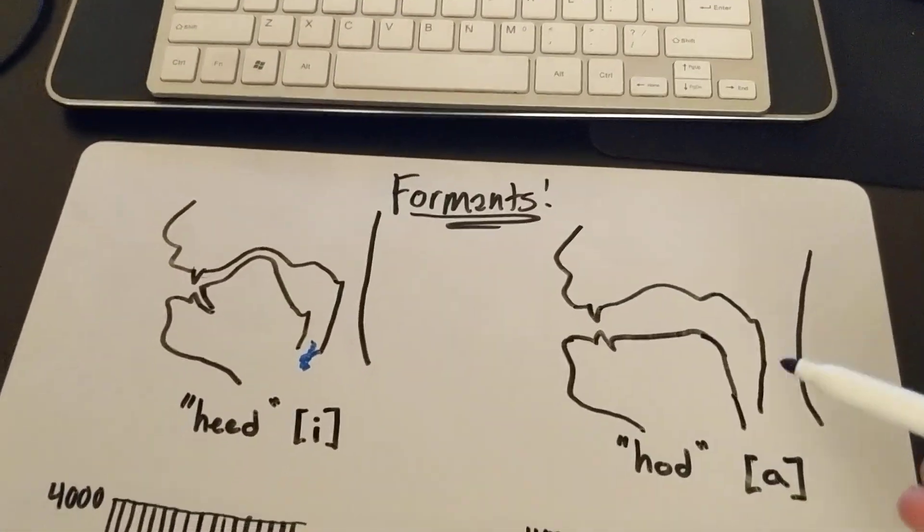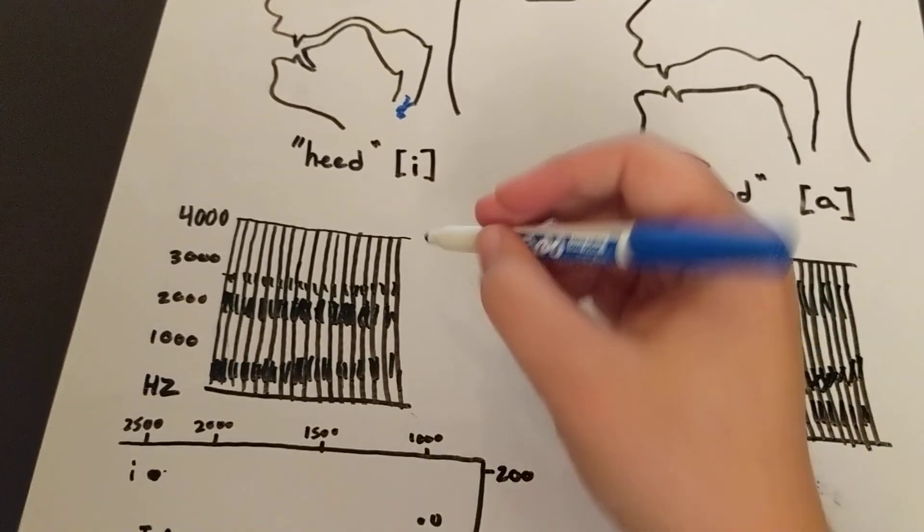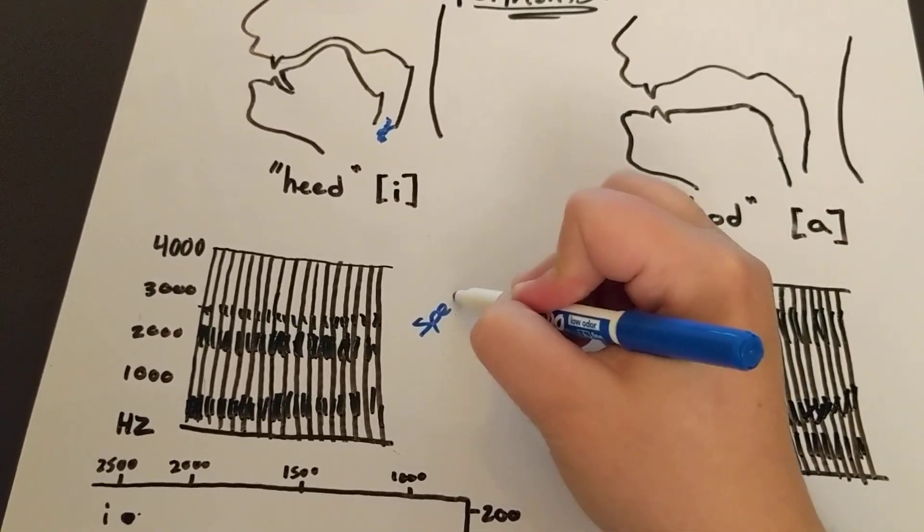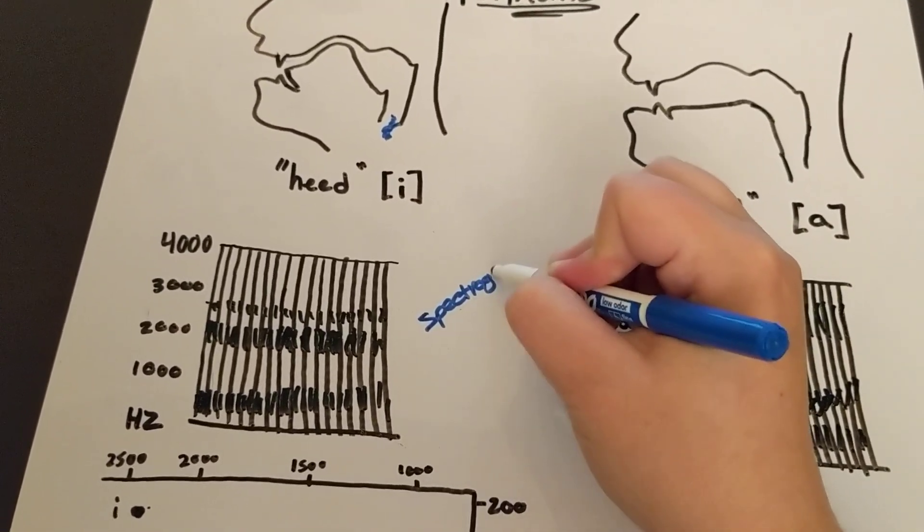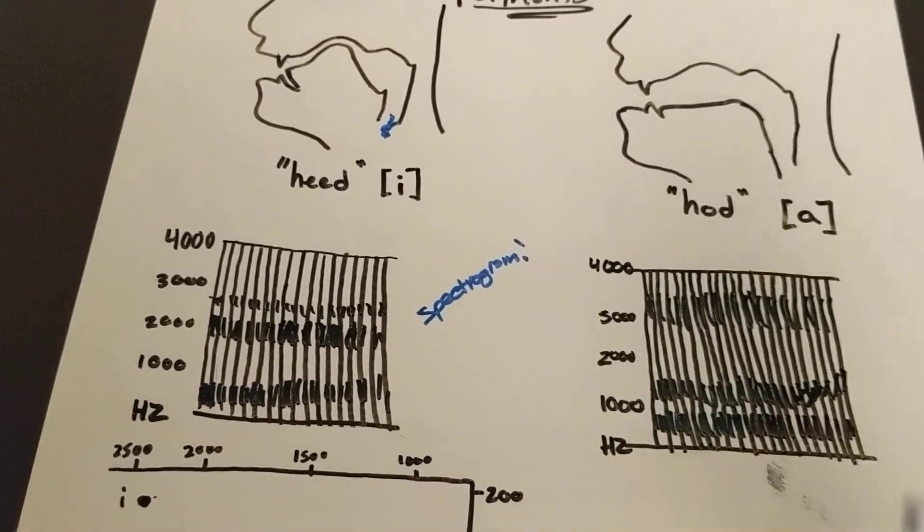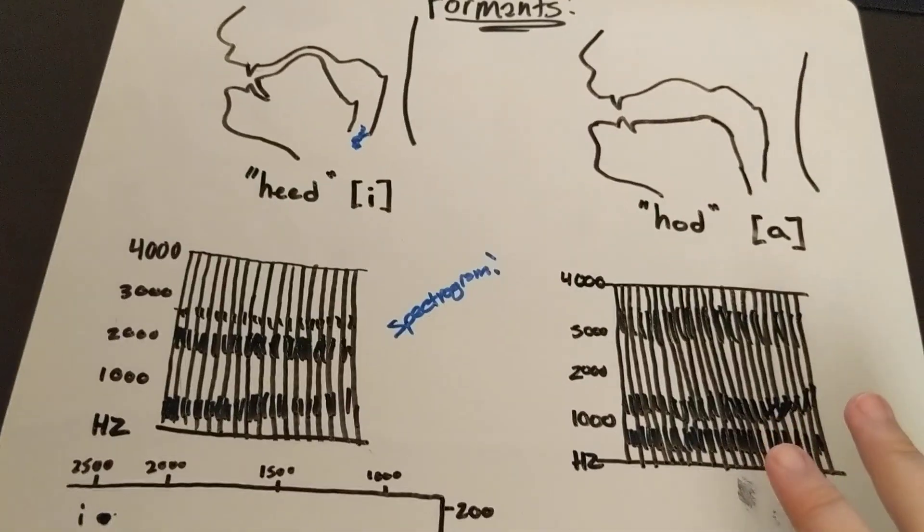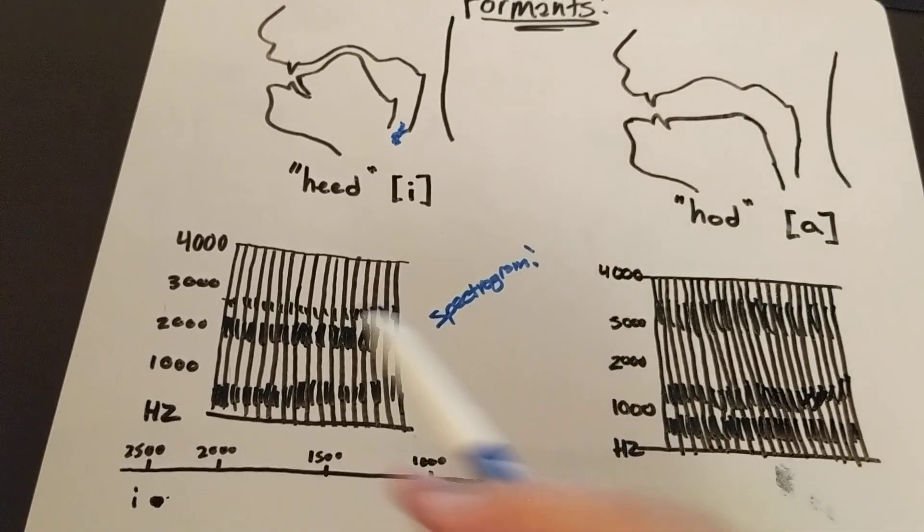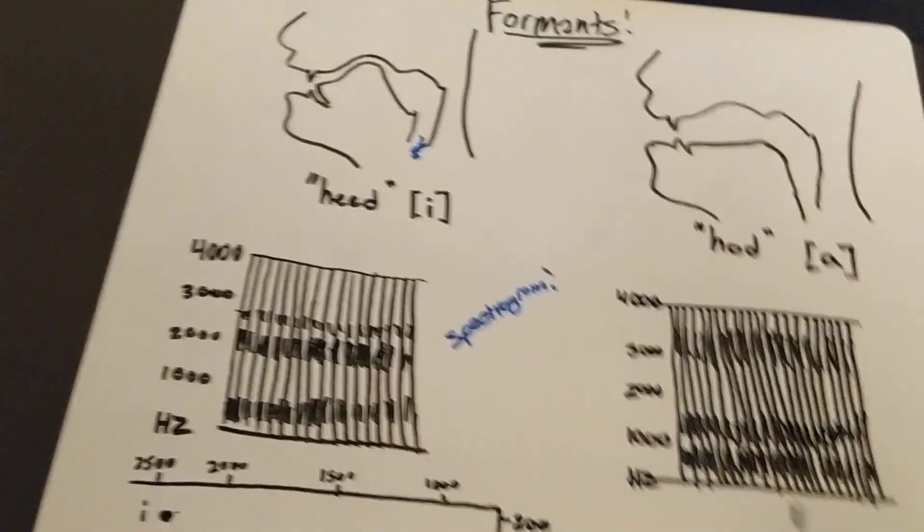Now, how do we measure that? We look at this chart called a spectrogram. This is the name of this type of chart. I'm not going to go into how you achieve a spectrogram. Just know that this is about what it looks like.